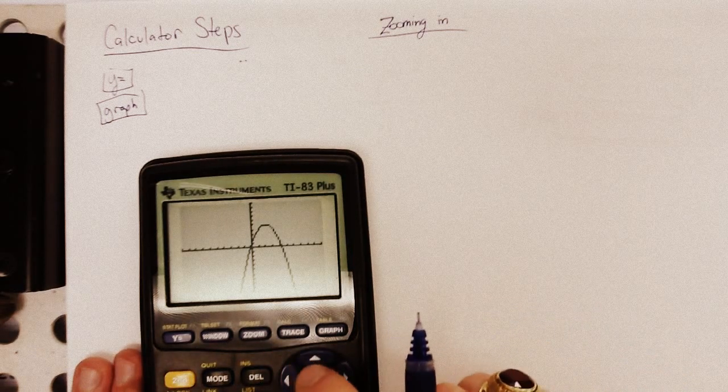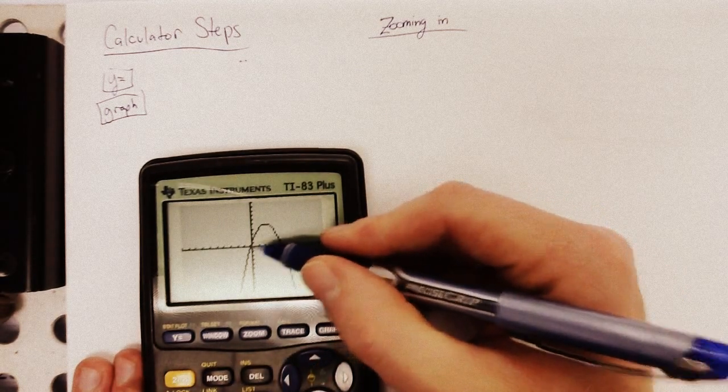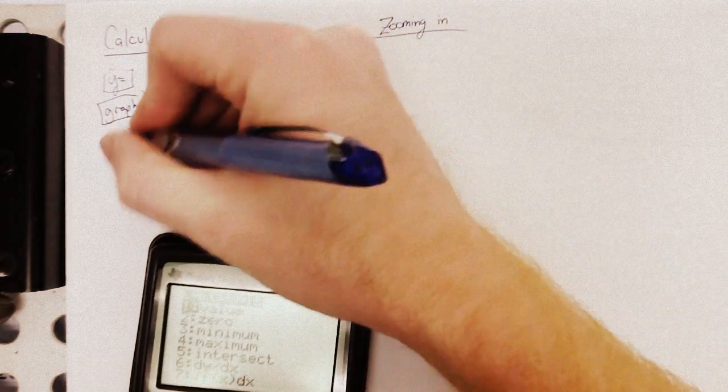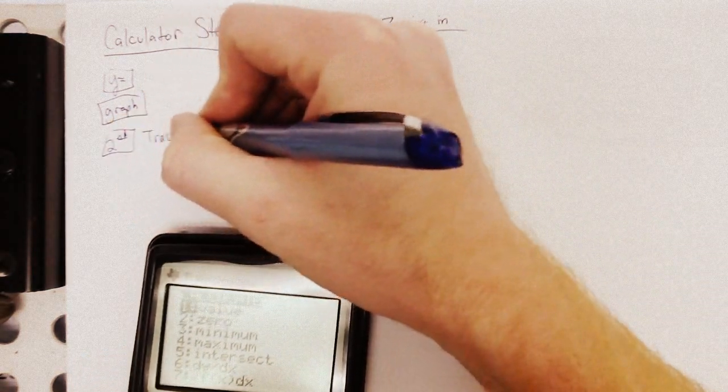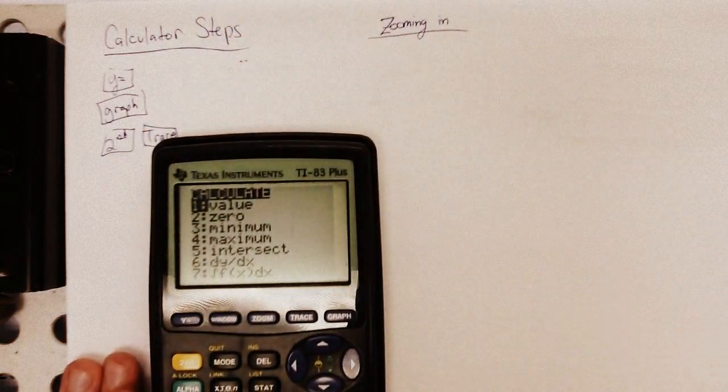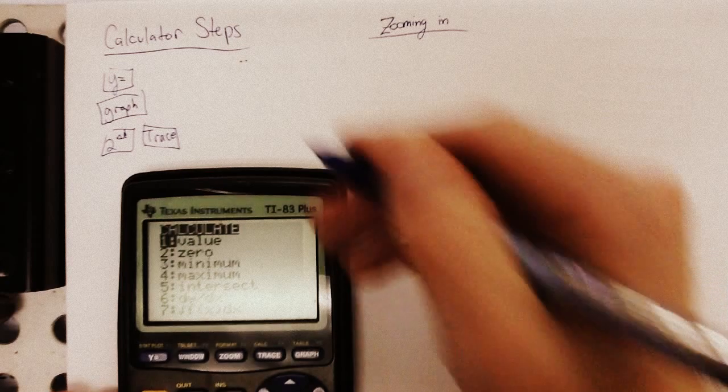All right. Well, I need to figure out exactly where it crosses. So, second, trace. So, let's write that down. Second, trace at the, you know, well, net sequence, not the same time, of course. And you want option number two, which is zero.